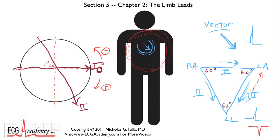Lead III, which goes from left arm to left leg, we draw just like this and label it Lead III. Thus we've divided the circle into six equal parts and defined the angles corresponding to these three basic ECG leads.